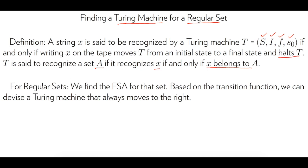For regular sets, we have something which makes it easy to design a Turing machine, because by the Kleene theorem a set is regular if and only if it can be represented by a finite state automaton. So for a given regular set we find the finite state automaton for that set, and then using the transition function we can devise a Turing machine accordingly.